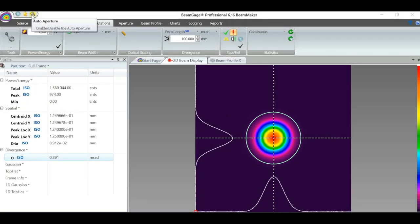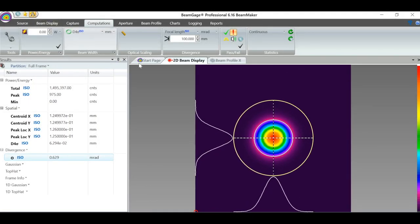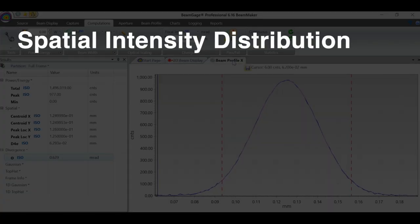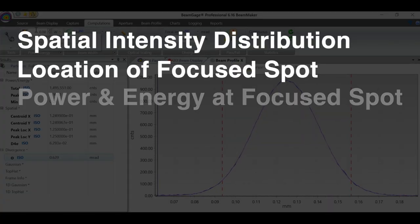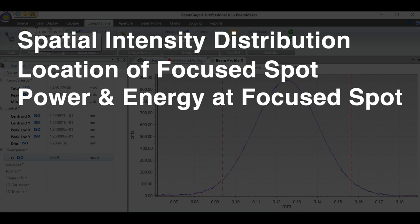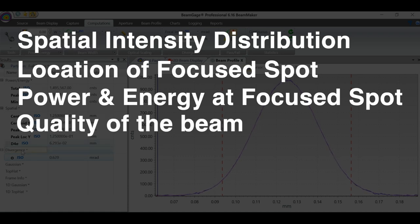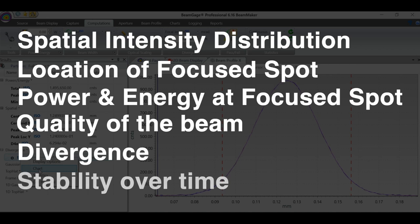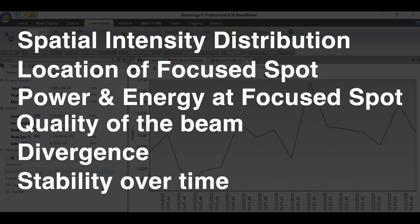The scientist and the production technician alike need to know spatial intensity distribution, location of the focused spot, power and energy at the focused spot, quality of the beam, divergence, and the stability of each of these parameters over time.